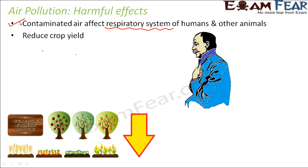Air pollution can also reduce crop yield. Crop productivity depends a lot on environmental conditions. For example, crops receive carbon dioxide from the atmosphere because they need it for photosynthesis. Plants also need various nutrients from the soil and water for proper growth and productivity. If the air is polluted, the carbon dioxide they take in may also contain harmful substances. Once toxic substances enter the plant, it can cause premature death or retarded growth, which in turn affects crop productivity and decreases crop yield.